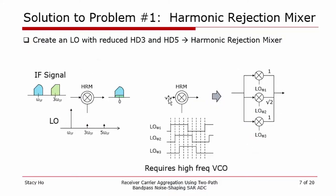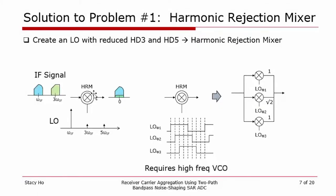A solution to the harmonic mixing problem is to make use of a harmonic rejection mixer. The concept is to create an LO with reduced odd harmonics, thereby minimizing the harmonic mixing. A typical way to implement a harmonic rejection mixer is with three parallel mixers with offset LO phases and varying LO amplitude — the middle mixer has an amplitude of root 2. Unfortunately, this does require a VCO to be running at a much higher rate than the LO.